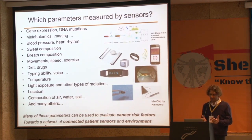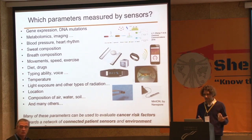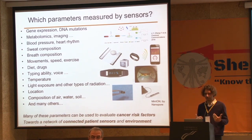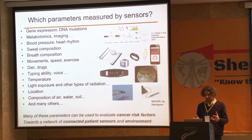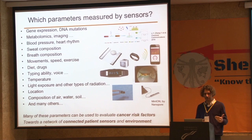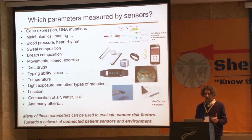If you look at what sensors can measure today, as we have seen yesterday, they can measure many parameters linked to the patient itself, like blood, heart, sweat, breath, and so on. And also many other parameters linked to the environment, like composition of air, water, soil, and many others. Many of these parameters measured by sensors are either directly or indirectly linked to cancer risk factors.